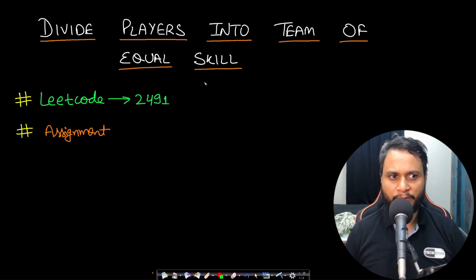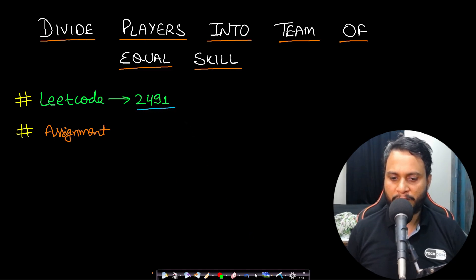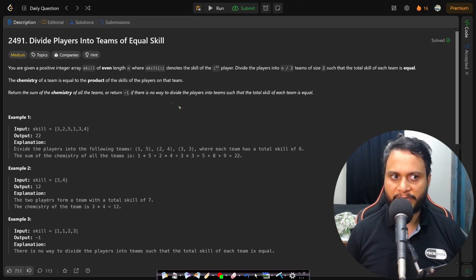Hello guys, welcome back to TakeDose. In this video we will see the 'Divide Players Into Teams of Equal Skill' problem, which is LeetCode number 2491. Let's now look at the problem statement.